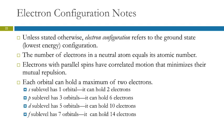Unless stated otherwise — excited state, ion, or some other condition — when we say electron configuration we're talking about the ground state: the lowest energy arrangement with all electrons in their lowest energy places.